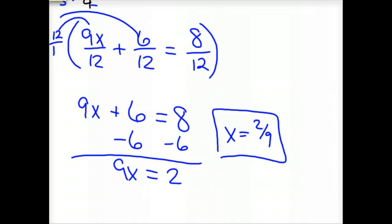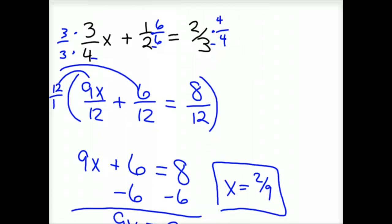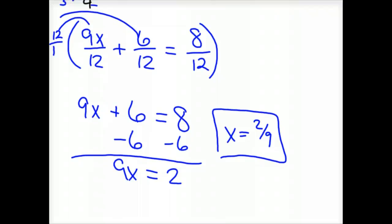Now to save time, I'm not going to check my answer, but you want to check your answer in these. In math you can always find out if it's correct by just taking the 2/9 and plugging it in for x right there. So 3/4 times 2/9 plus 1/2 should equal 2/3. But to save time we won't worry about it.